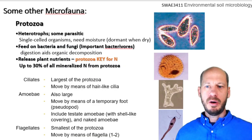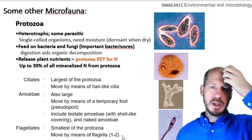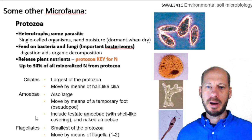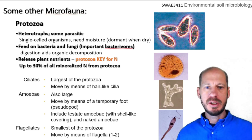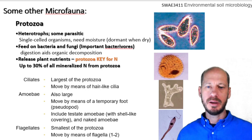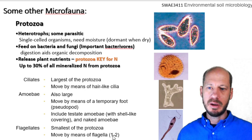Other organisms we can name here: ciliated protozoa, amoeba and flagellate protozoa, which are less important for soils than they are for water systems. Nevertheless, in soil systems they may play a role in humid environments.